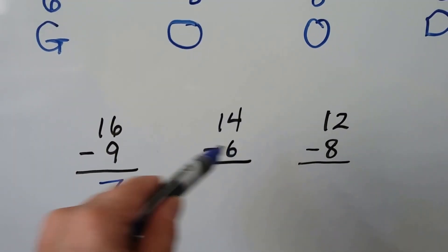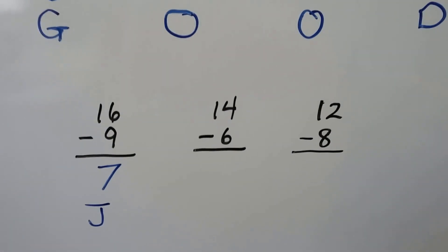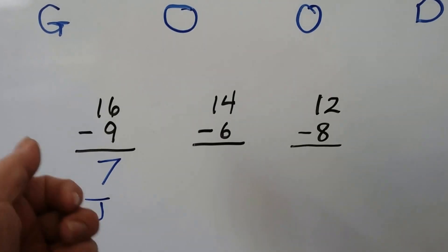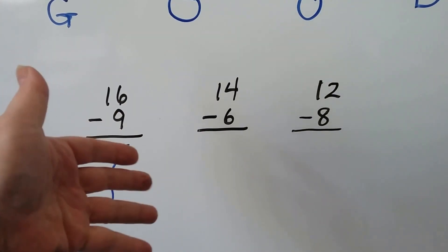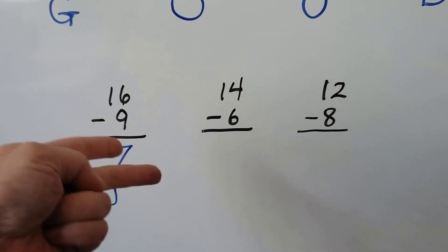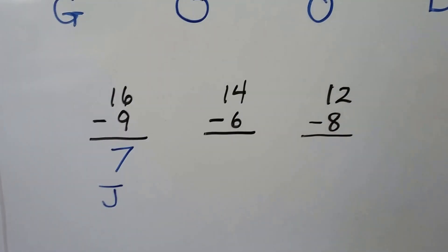Now we have 14 minus 6. We can count back or count on. Let's try counting back. 13, 12, 11, 10, 9, 8, 7, 6. That was 8 fingers.